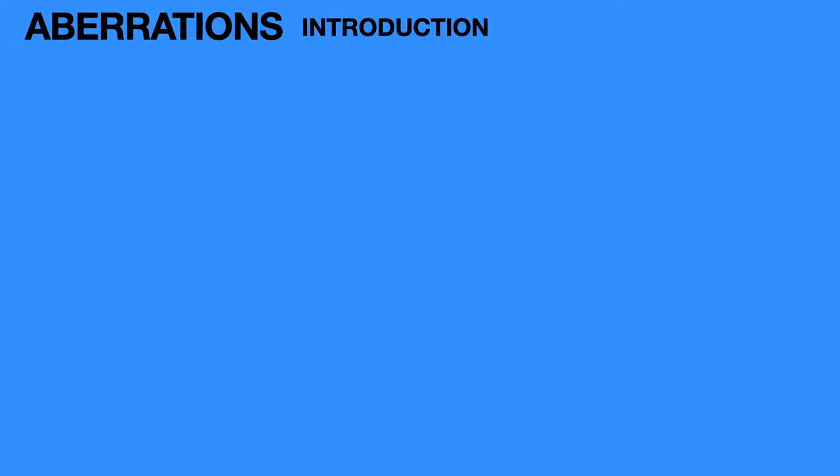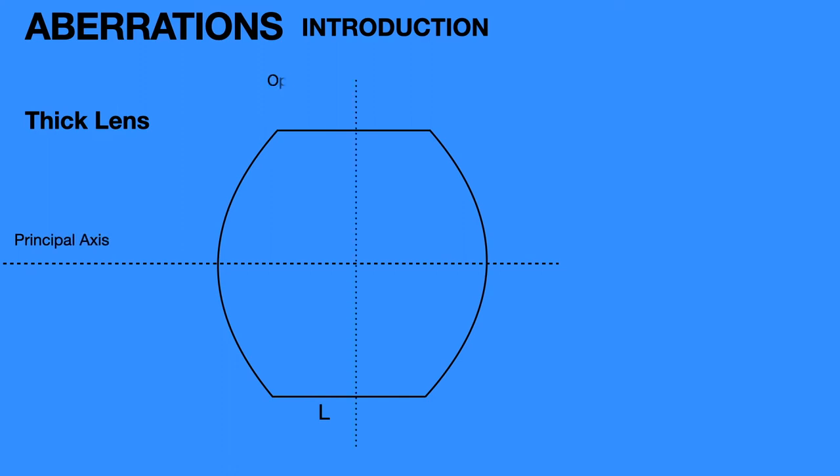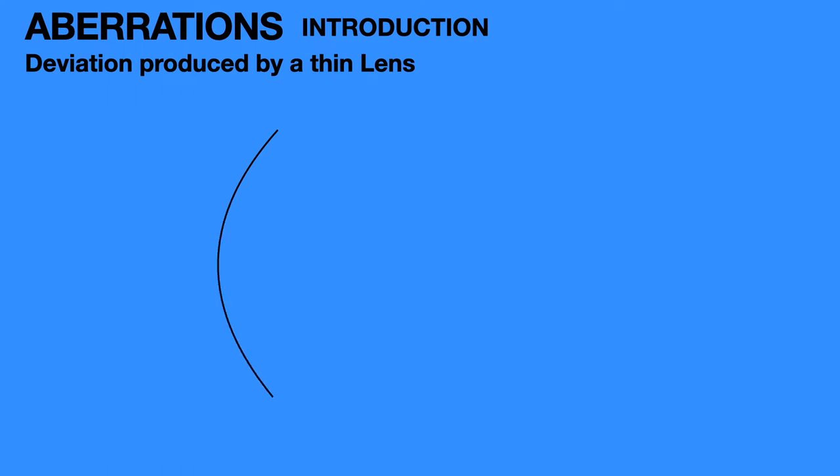Now we will discuss the first topic in our lesson, that is, the deviation produced by a thin lens. Here, thin lens means its thickness is very small. If you take a thick lens, its thickness is very large, so we need to consider the object distance and image distance with respect to the thick lens also. But here, the thin lens is very small, so the object distance and image distance we can take from the optic axis.